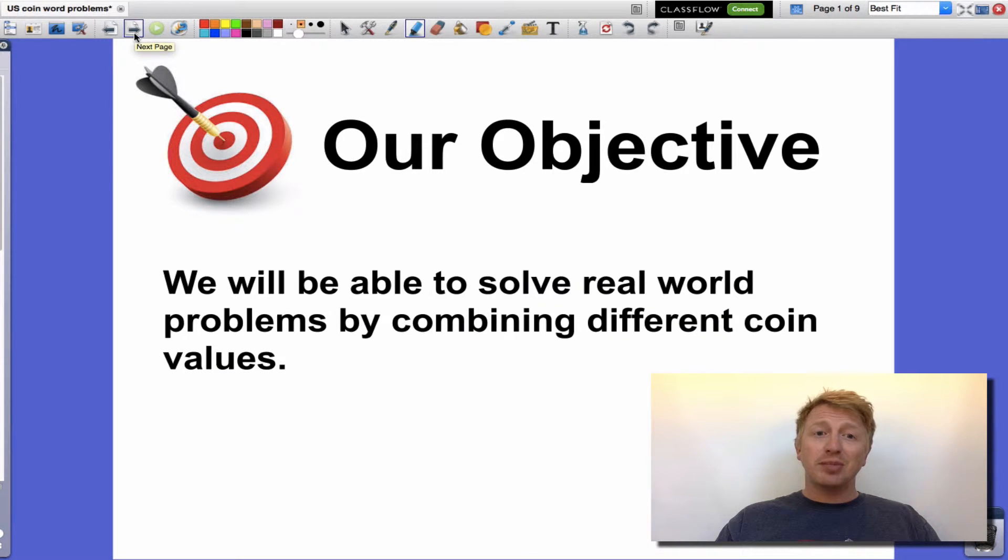Hey boys and girls, it's Mr. Murphy and today we're going to be able to solve real world problems by combining different coin values. Now this is a super duper important skill. We use this all the time when we're at the store, when we're seeing how much money we saved, how much money we spent. So pay close attention.